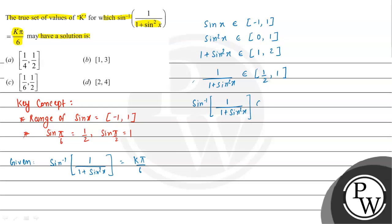Now we apply sin inverse to this range. So sin inverse of the expression — which belongs to [1/2, 1] — equals k times pi by 6. The value of sin inverse(1/2) is pi by 6, and the value of sin inverse(1) is pi by 2. So k times pi by 6 belongs to [pi/6, pi/2].